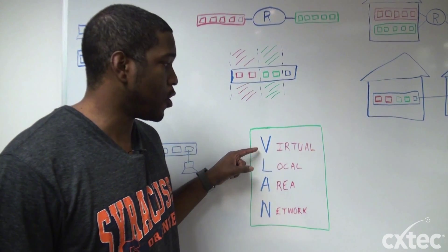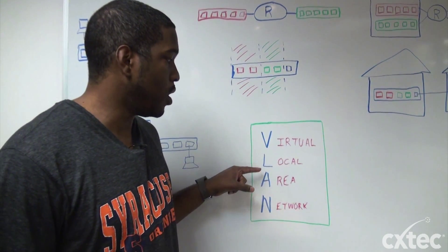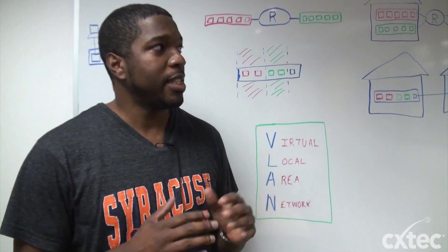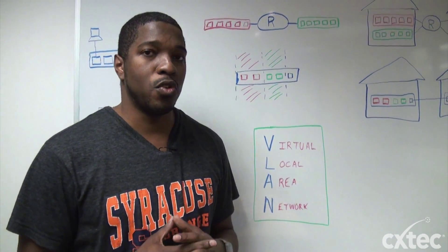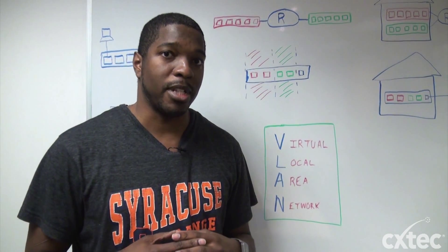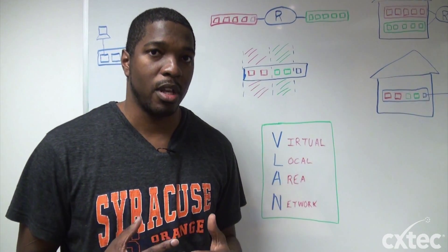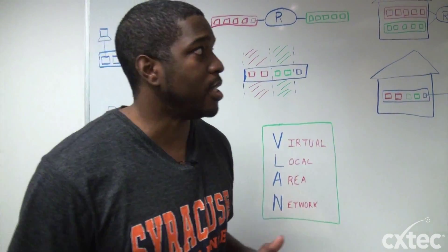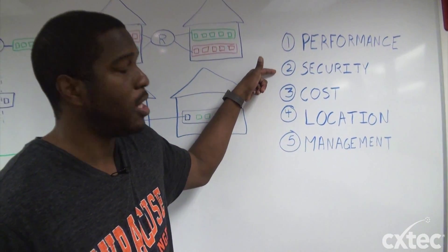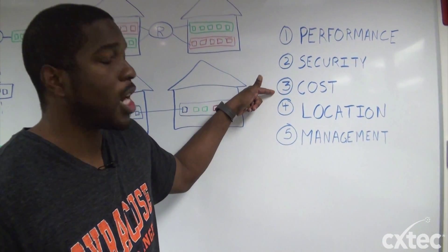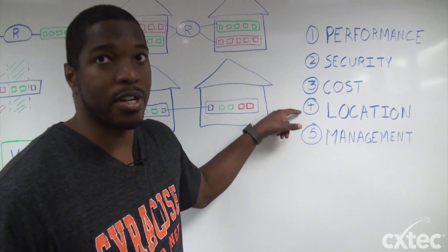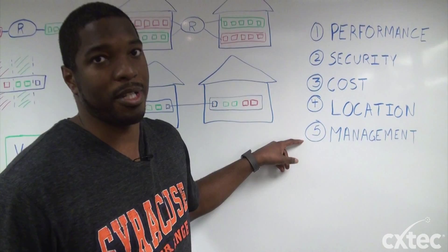A VLAN basically stands for Virtual Local Area Network. In its simplest form, what that is, is basically taking a layer 2 network that might be sizable and splitting it up into multiple networks. What that does is improve performance, improve security, lower your cost, gets over some of the location barriers that you have, and simplifies management.